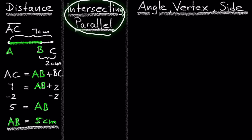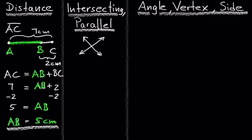Let's look at lines in a plane, which can be intersecting or parallel. Intersecting lines cross at a point in the plane. And parallel lines never cross. The distance between parallel lines is always constant.